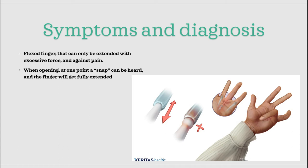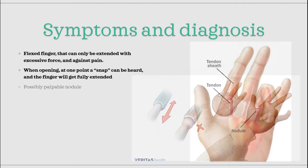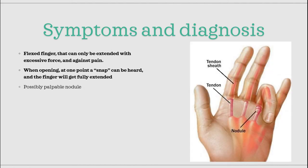For the diagnosis, these classical symptoms are enough to diagnose the disease. Another important symptom to know is that there might be a palpable nodule somewhere along the tendon of the affected finger. This nodule is where the inflammation and thereby the problem comes from.